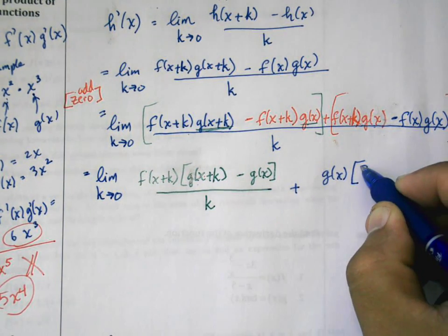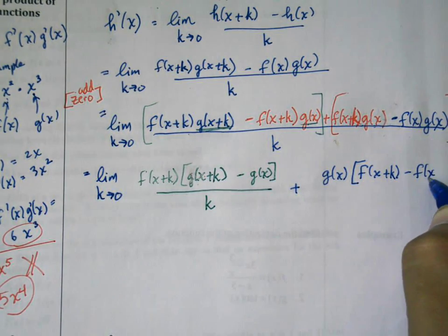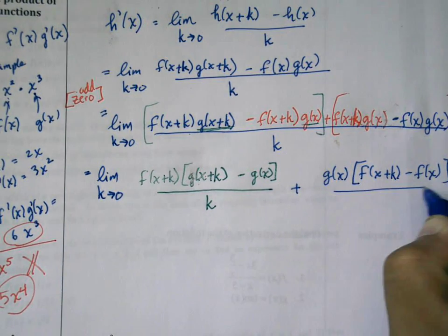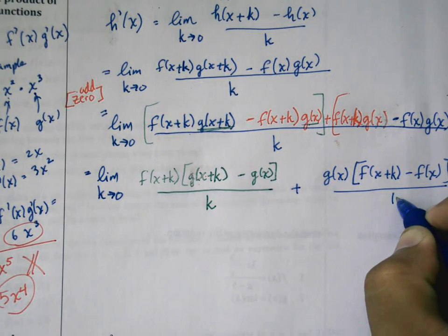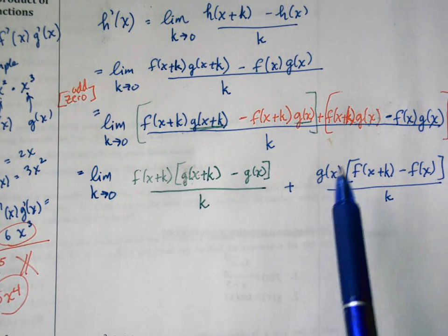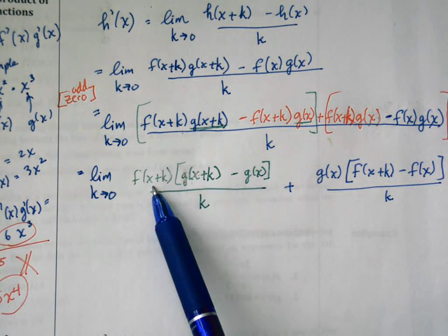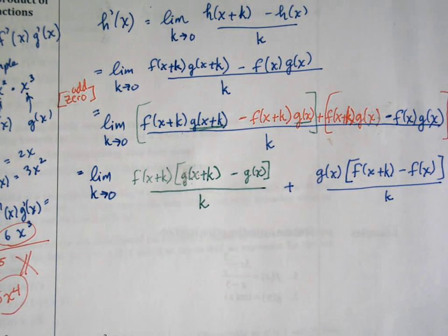And over here what I have is still the plus, and I'm going to factor out a g of x here. What's remaining is f of x plus k minus f of x, all of that over k. So what I've effectively done is took this fraction, split it, and at the same time factored out the common components.